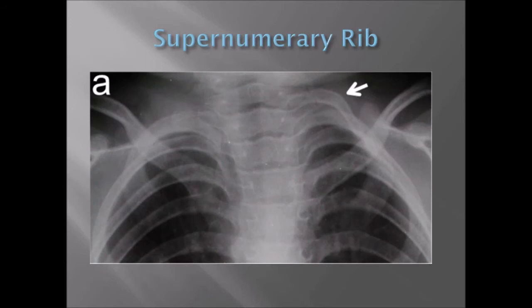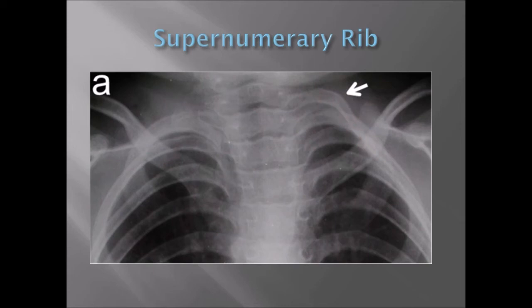Supernumerary just means extra bones. Ribs are very common to have extras of. They usually happen up in the cervical region in the neck, near the transition between the cervical vertebrae and the thoracic vertebrae, which are normally associated with the ribs. We'll often have an extra little rib growing in there - called a cervical rib, meaning it's in the neck. Sometimes it can cause numbness or even pain if it affects nerves. You can also have supernumerary ribs lower in the thorax, or even fewer ribs - all kinds of variation in the ribs.